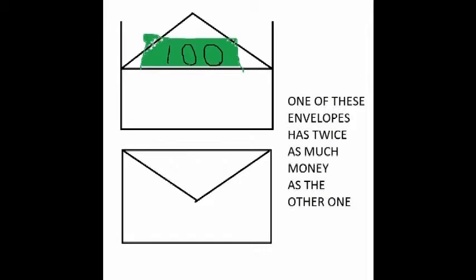The paradox is as follows. The other envelope must contain either fifty dollars or two hundred dollars. In the event that it contains fifty dollars, you will lose only fifty dollars by switching. But in the event that it contains two hundred dollars, you will have gained one hundred dollars by switching. You have a fifty percent chance of losing fifty dollars and a fifty percent chance of gaining a hundred dollars. Therefore it makes sense to switch because your expected gains are higher.